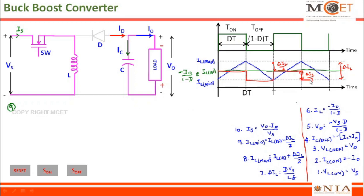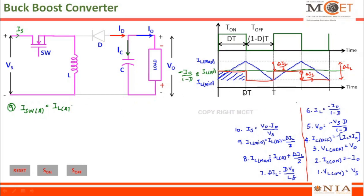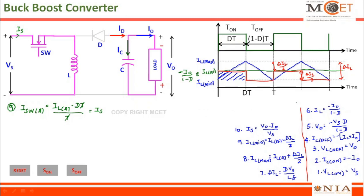From this point it will come down. Now I want to find out the average value of this waveform over the time period T. Let me take this rectangle area. If I try to find out the rectangular area, the average value of the switch is given by the height of this rectangle, which is IL average, into the breadth of this rectangle, which is DT, whole divided by the time period T. This T and this T will get cancelled, so the switch average value is IL average into its duty cycle D.